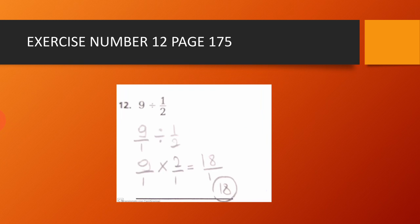Exercise number 12, page 175. We have 9 divided by 1 over 2. We write the 9 as a fraction: 9 over 1 divided by 1 over 2. We use the rule: keep, change, flip. So 9 over 1 times 2 over 1. 9 times 2 equals 18, and 1 times 1 equals 1. So the result is equal to 18 over 1, which is equal to 18.